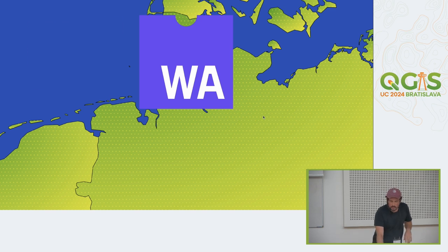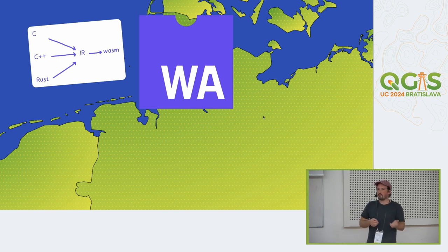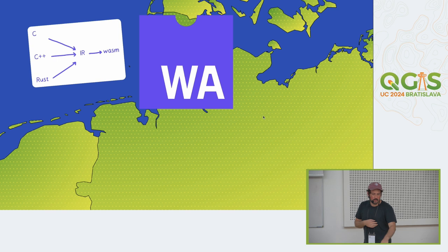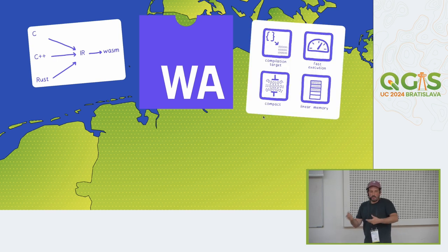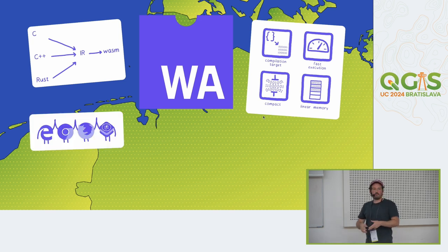WebAssembly — a short introduction. You can imagine it like a virtual processor architecture. It defines its own instruction set and binary bytecode. You can use languages like C, C++, or Rust and compile them to this virtual processor. The resulting bytecode is run by a WebAssembly runtime. The design goals were to be fast, compact in bytecode representation, and to have a simple linear memory model. This has been implemented in all major browsers — everybody can use it. It's even working on mobile and on Node and other JavaScript runtimes.